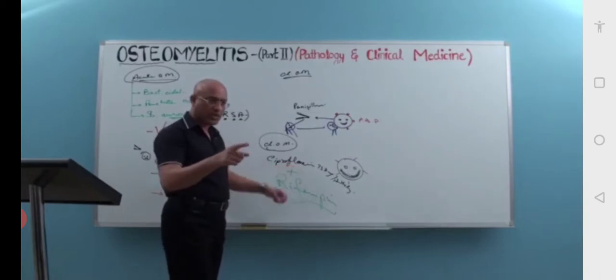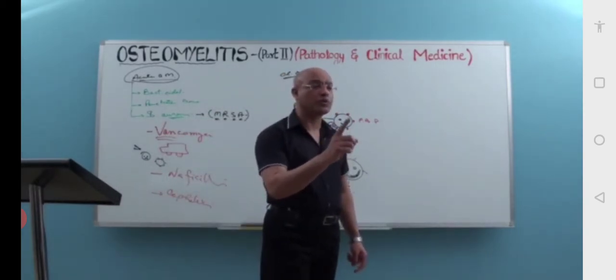I was talking about chronic. In acute osteomyelitis, the antibiotics should be given parenterally and should be given for a long time, four to six weeks.